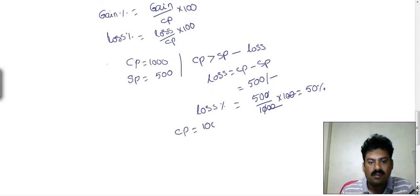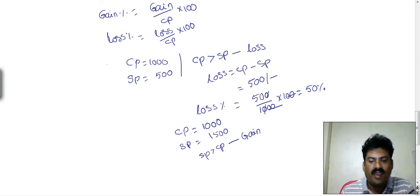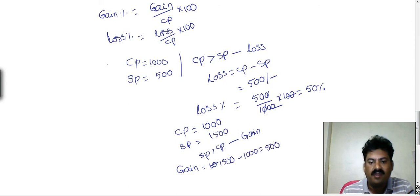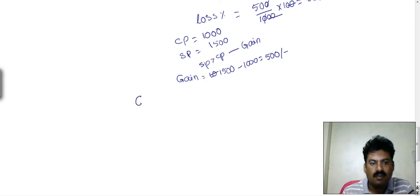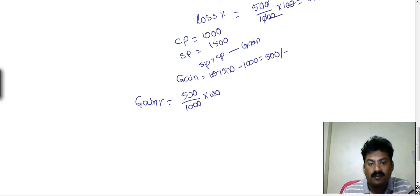Now suppose the cost price is 1000 and the selling price is 1500. Here, selling price is greater than cost price, so there is a gain. The gain equals selling price minus cost price: 1500 minus 1000 equals 500. The gain percentage equals 500 divided by 1000 into 100, which gives 50% gain.